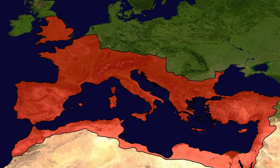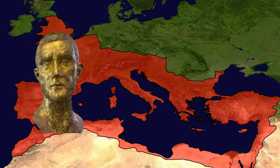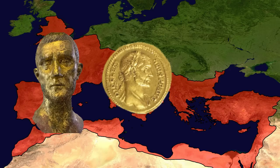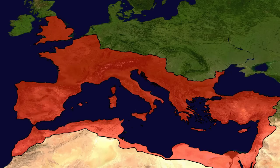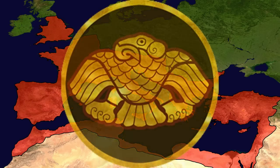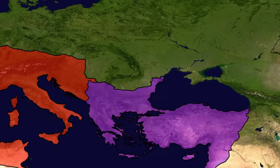Yet it didn't, and thanks to emperors like Aurelian, Diocletian, and Constantine, Rome remained strong well into the late 4th century. It is really a source of irony that the domino effect that eventually led to the fall of the Western Empire actually began in the east with the arrival of the nomadic Huns.